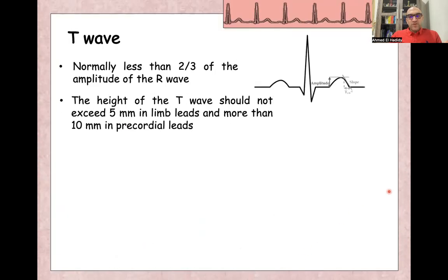Also, T wave normal amplitude is more than one eighth of the amplitude of the preceding R wave, but not exceeding two thirds of amplitude of the preceding R wave. Also, we can generally say that normally the amplitude or height of T wave is not more than five millimeters in limb leads and not more than 10 millimeters in chest leads.